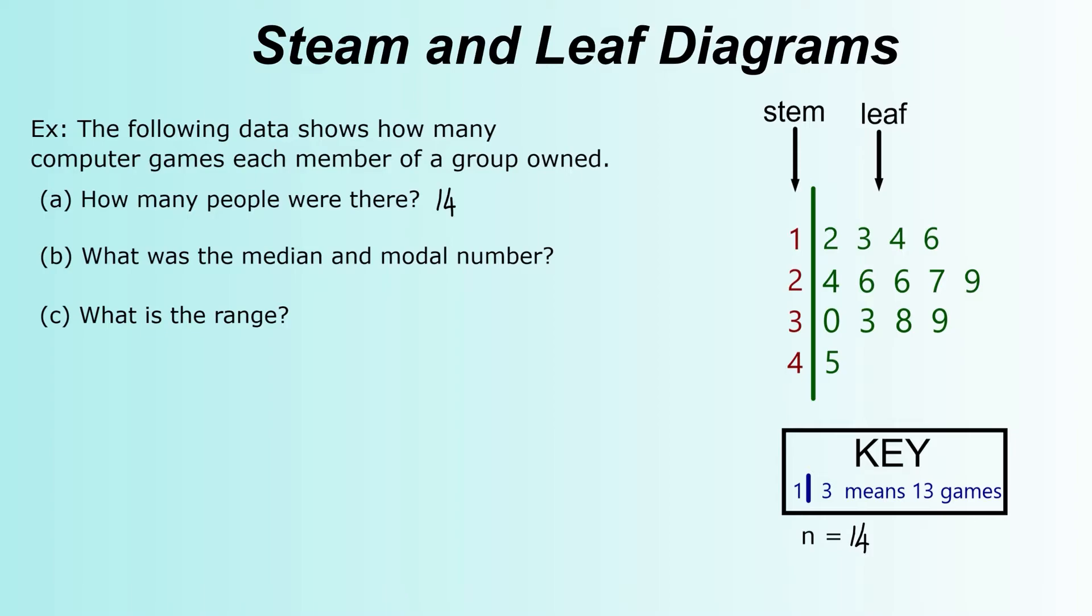What was the median and modal number? So the median, if you remember back to your mean, median, and mode, the median is the middle number. Now the numbers are already in order in the stem-and-leaf diagram. We don't have to write them all out. The median is the middle number. We know there's 14 numbers altogether. So we're going to split it 7 in the bottom half, 7 in the top. So we're going to count in 1, 2, 3, 4, 5, 6, 7.